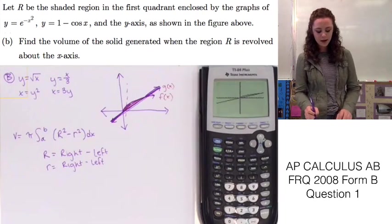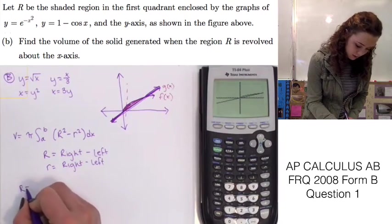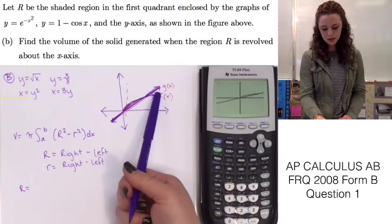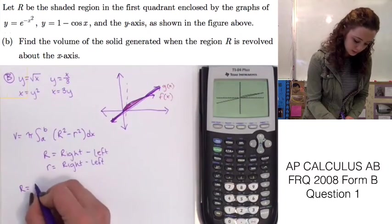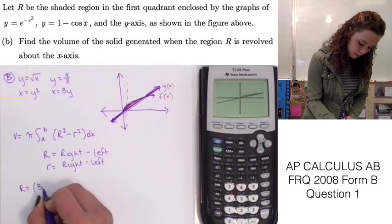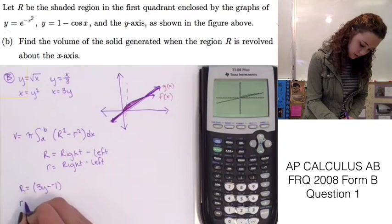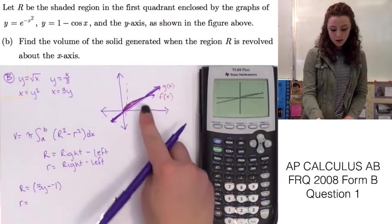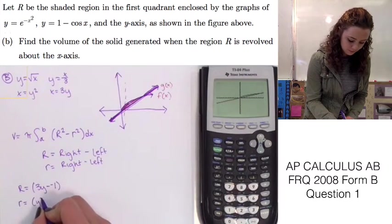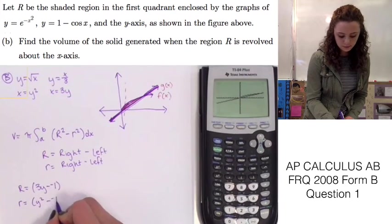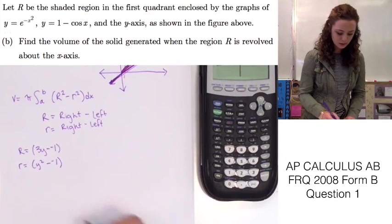Let's find these, little r and big R. We know the big R, our right function is g of x, which is x equals 3y. So big R is going to be 3y minus negative 1. And little r is going to be, the right function for little r is f of x, so that's y squared minus negative 1. Now we can plug those back into the function.